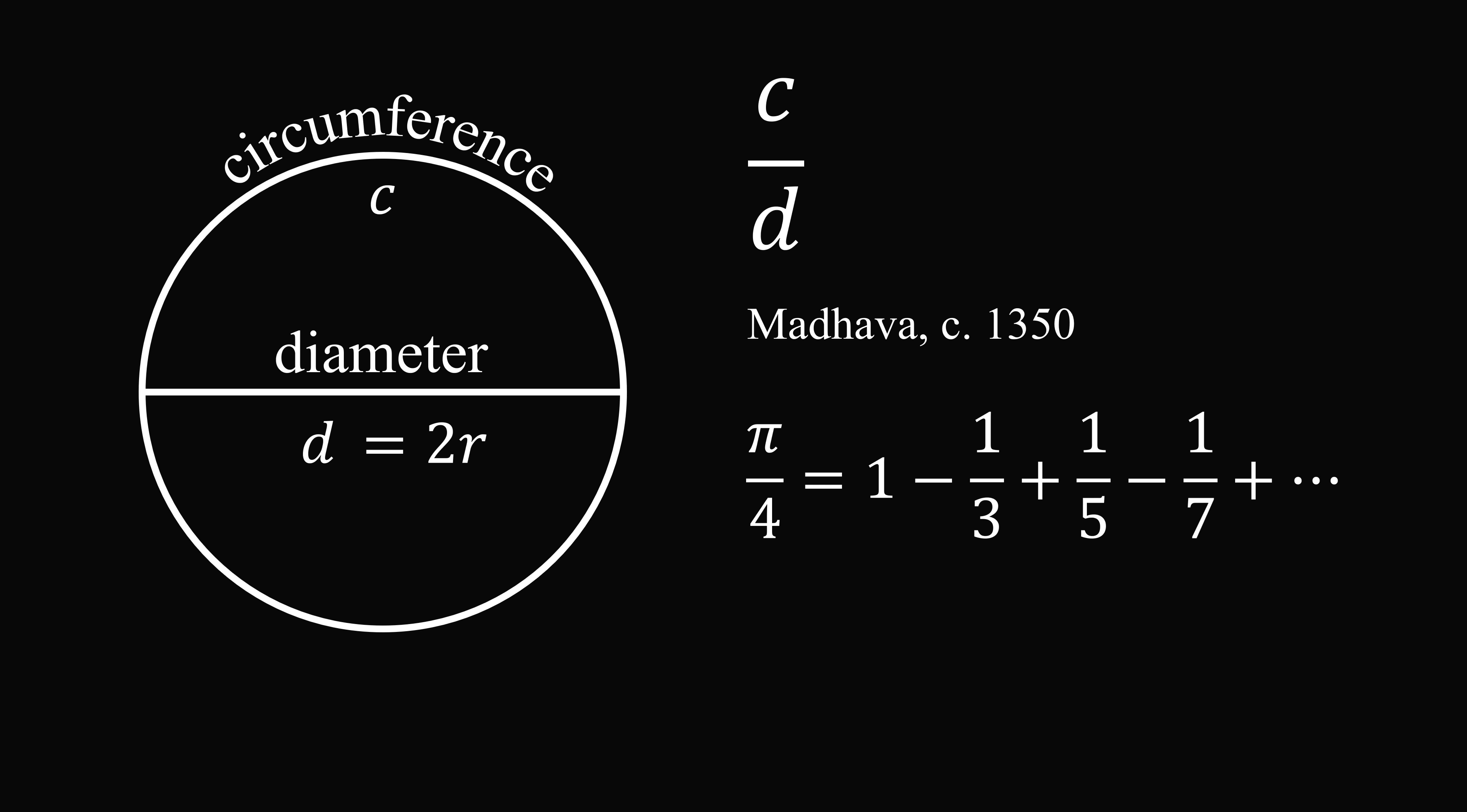This is such a beautiful formula. Pi over 4 is equal to 1 minus 1 over 3 plus 1 over 5 minus 1 over 7 and so on. Madhava shattered the previous calculation record and got pi to somewhere between 10 to 14 digits of accuracy.